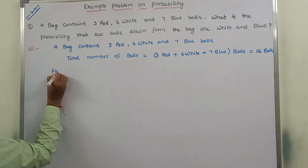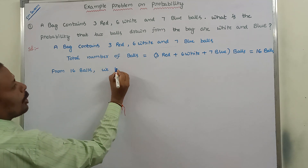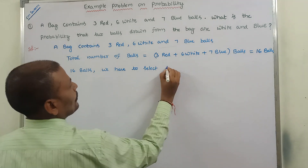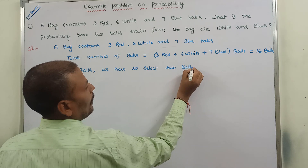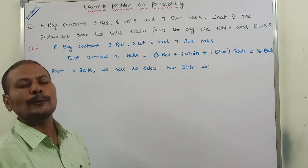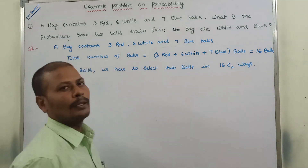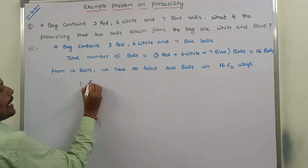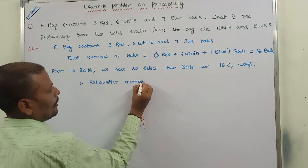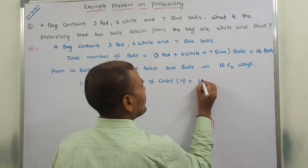From sixteen balls, we have to select two balls. In how many ways? Total sixteen balls are available; among those sixteen balls, we have to select two balls — in sixteen C2 ways. Therefore, the exhaustive number of cases, denoted by n, is equal to sixteen C2.